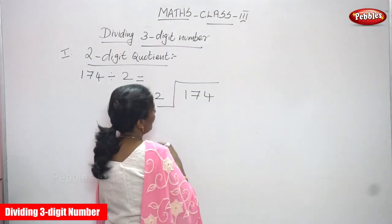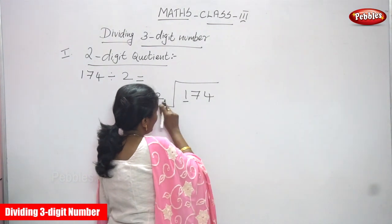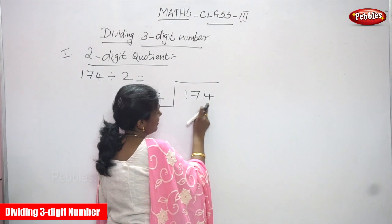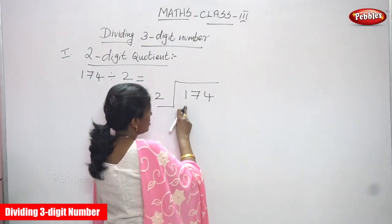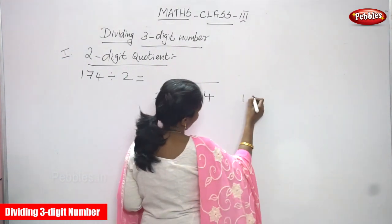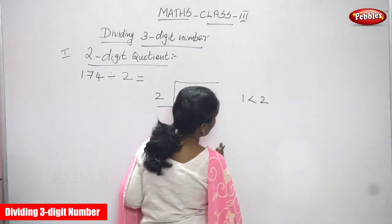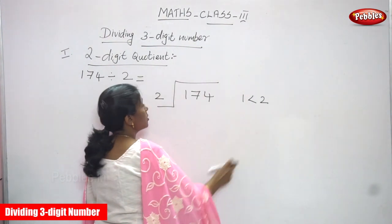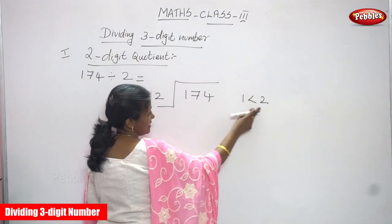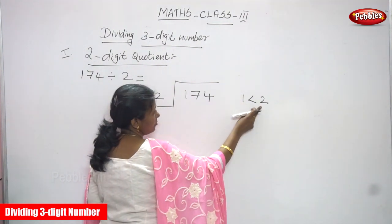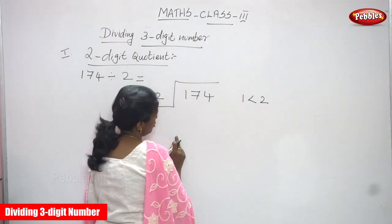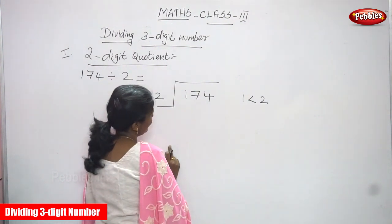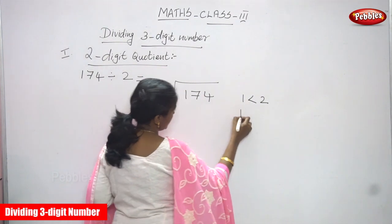First, you have to compare 1 and 2, because this is the 100's place, this is the 10's place, and this is the 1's place. So 1 is less than 2 — it is not enough to divide by 2. So you must take the next digit, which is 7. Now it becomes 17.